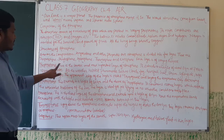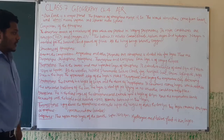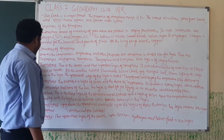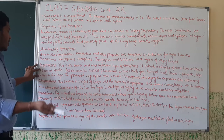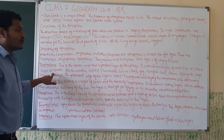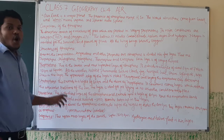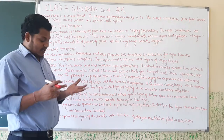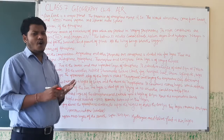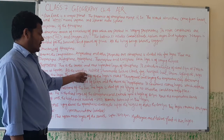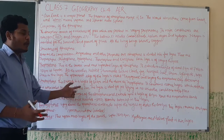The troposphere is the lowest and most important layer of the atmosphere. It extends to a height of 8 km at the poles and 18 km at the equator. All weather-related phenomena such as rainfall, hail, fog, storm, and lightning take place in this layer only.